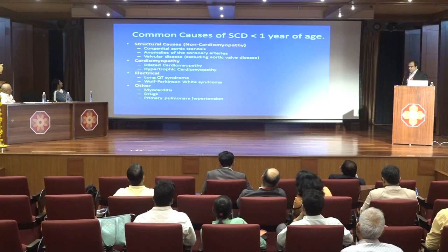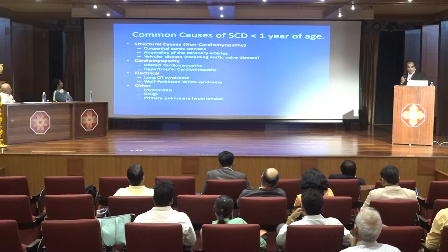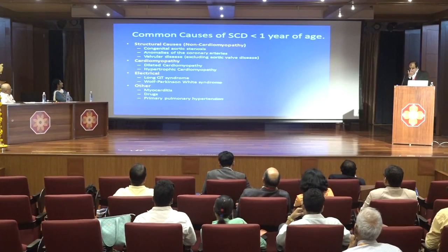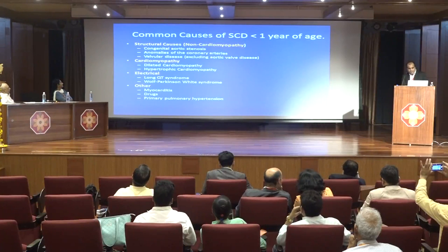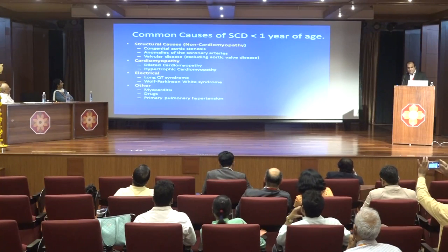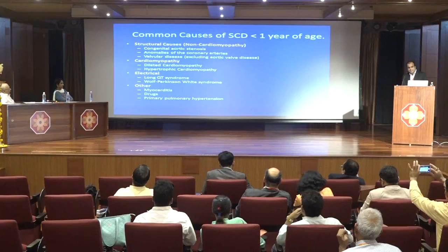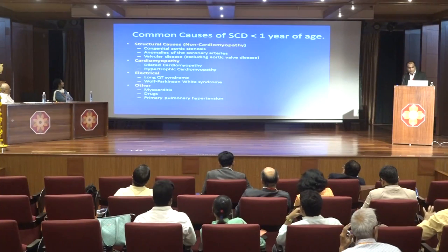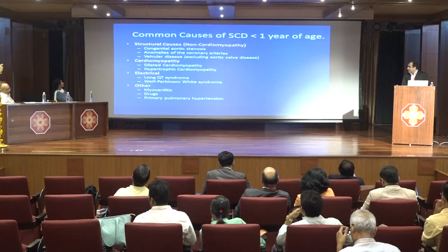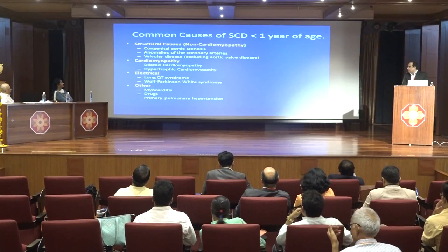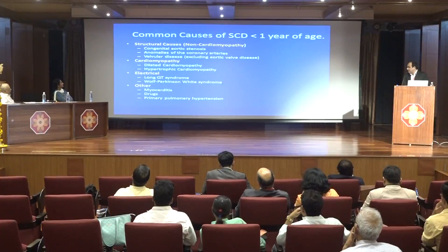Common causes of sudden cardiac death in children less than one year of age include structural causes — non-cardiomyopathy — such as congenital aortic stenosis, anomalies of coronary arteries, and valvular diseases excluding aortic valve disease. Cardiomyopathies include dilated or hypertrophic cardiomyopathy. Other causes include long QT syndrome, WPW syndrome, myocarditis, certain drugs, and primary pulmonary hypertension.